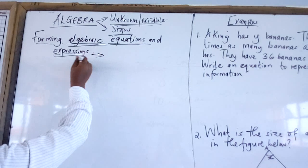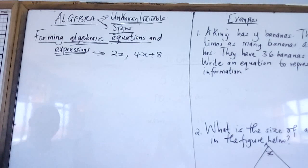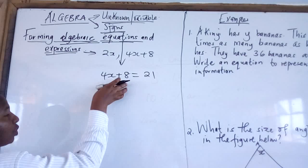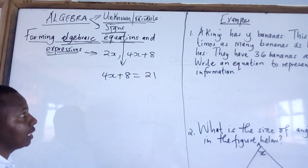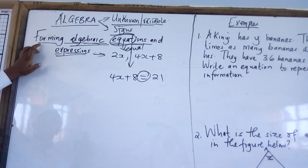Examples of expressions include 2x and 4x plus 8. These are two terms joined by addition, representing a certain piece of information. Examples of equations include 4x plus 8 equals 21. In an equation, we are balancing the expression with a value on the other side — the word 'equation' contains the word 'equal,' and that is what balances both sides. Today we want to form algebraic equations and expressions.